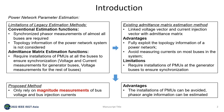By relying on the magnitude measurements of bus voltage and bus injection currents, we proposed a novel power network parameter estimation method. Through this way, the installation of PMU can be much avoided, and phase angle information that is unknown can be estimated.